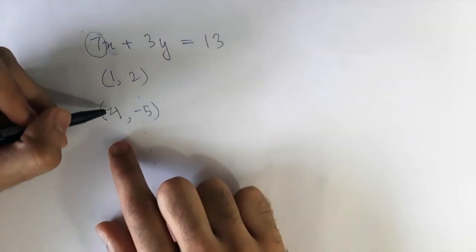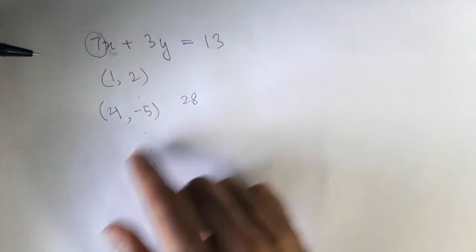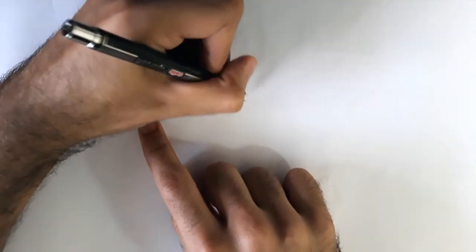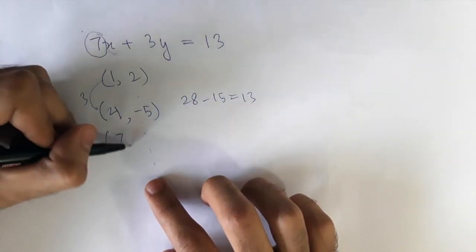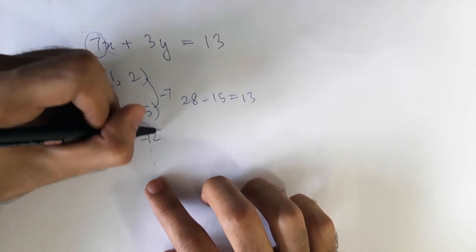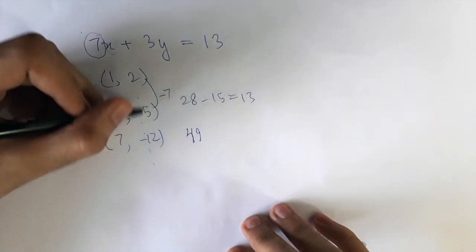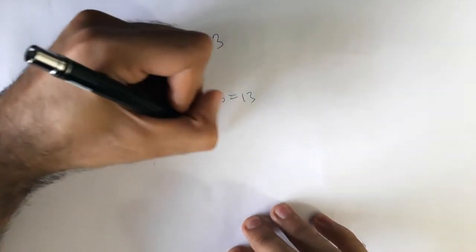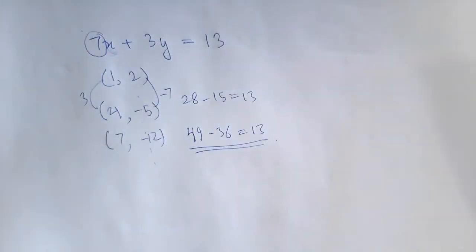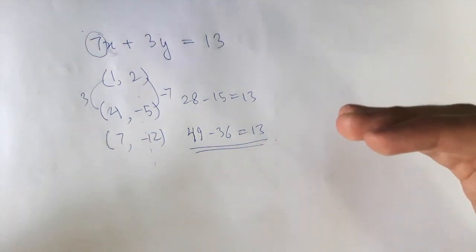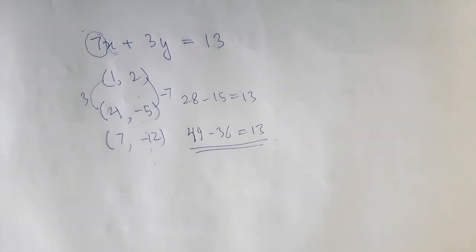Let's check: 7×4 = 28, 3×5 = 15, and 28 - 15 = 13. Correct! Continuing the AP: x = 7, y = -12. Check: 7×7 = 49, 3×12 = 36, and 49 - 36 = 13 again. You're starting to see how all integral solutions of a linear equation lie in an AP.